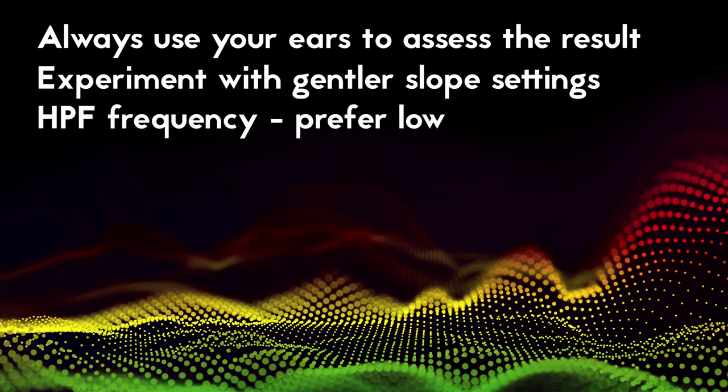The biggest phase shift happens around the cut-off frequency, so if you're clearing some low noise or rumble around 50Hz from an instrument where the lowest fundamental is around 200Hz, then set the high-pass filter as low as possible to avoid affecting the sound of the instrument itself.